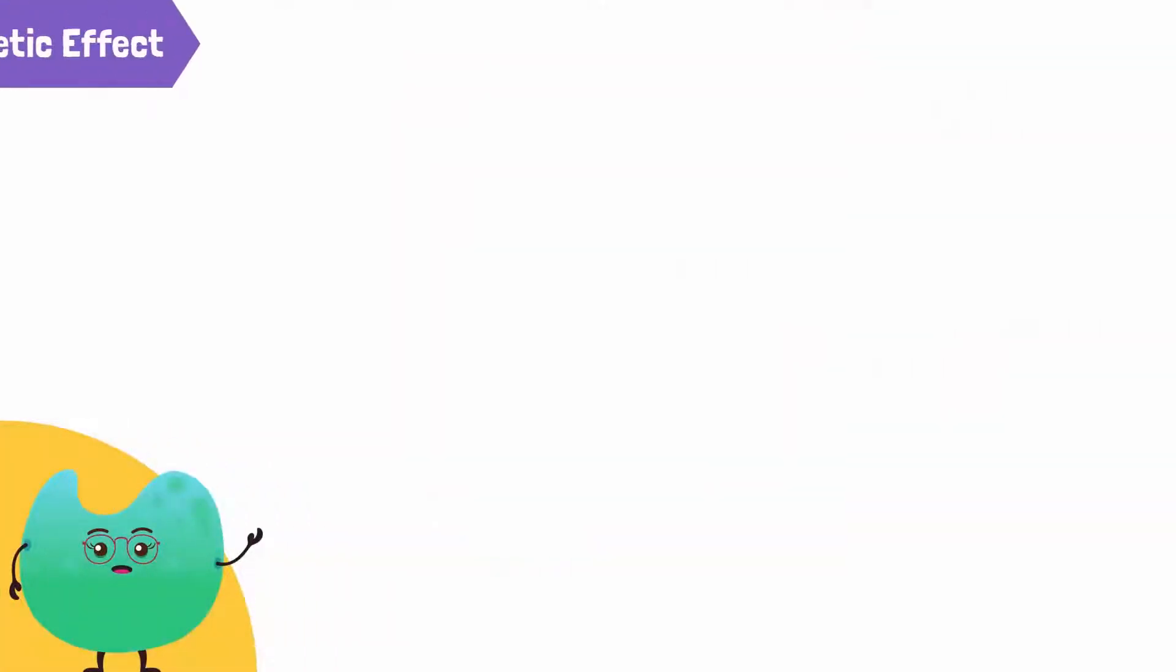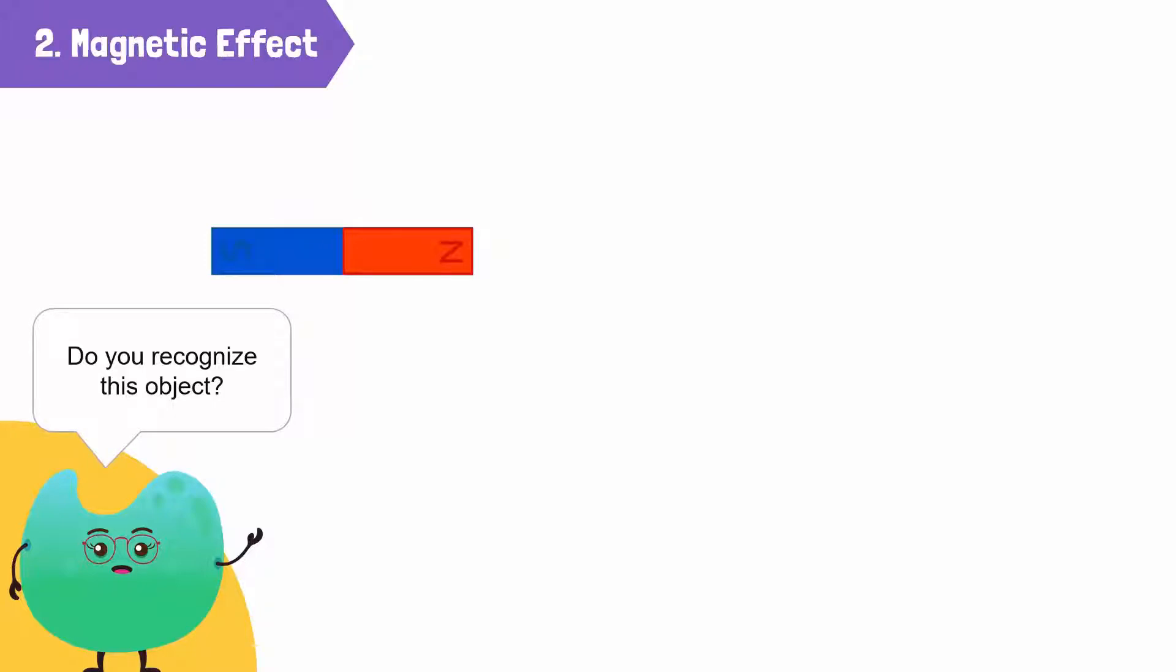Secondly, an electric current produces magnetic effect. Do you recognize this object? This is a magnet. It attracts objects made of iron.